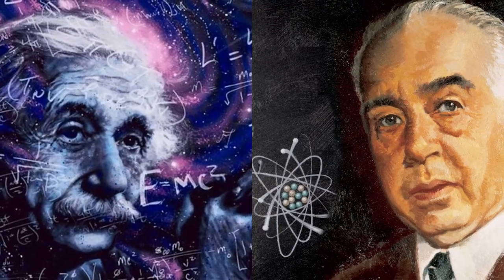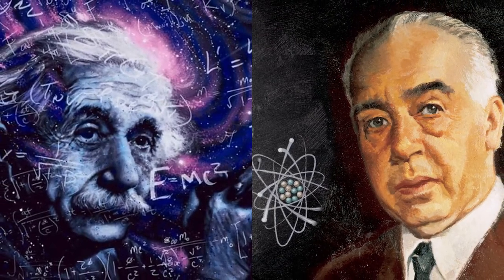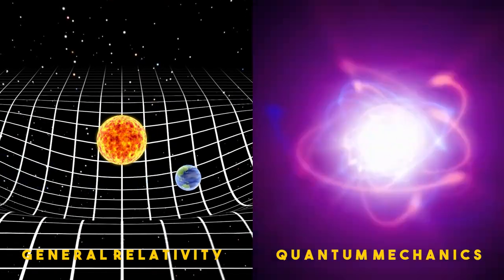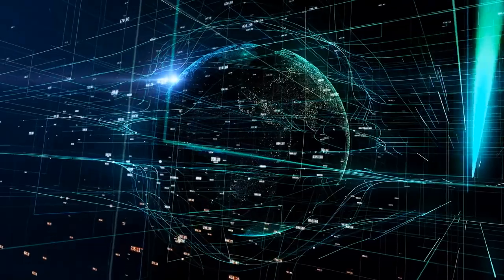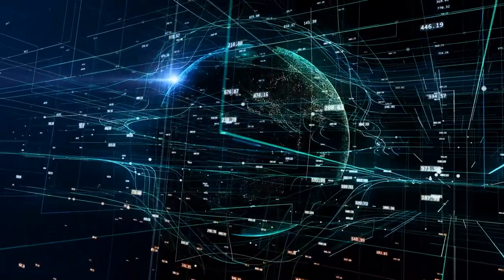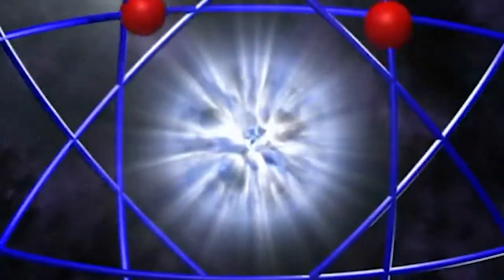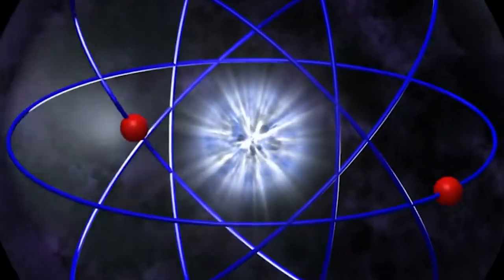Two of the most successful theories that help us answer many questions about our universe are general relativity and quantum mechanics. Albert Einstein's theory of general relativity is an elegant description of how the force of gravity works at large scales, while quantum mechanics explains the other three fundamental forces at the smallest of scales.